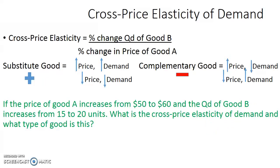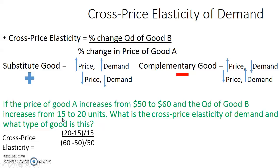Let's try one more cross-price elasticity example. The price of good A increases from $50 to $60, and the quantity demanded of good B increases from 15 to 20 units. Using the formula: percentage change in quantity demanded of good B is (20 − 15) / 15, and percentage change in price of good A is (60 − 50) / 50. This gives a cross-price elasticity of approximately 1.67.